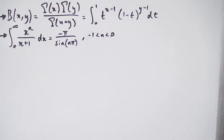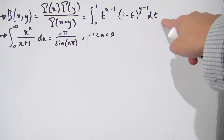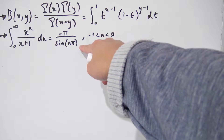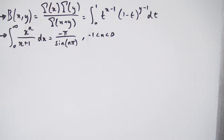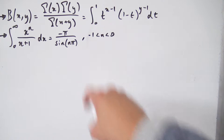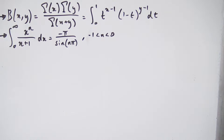Hello everybody, and today I'm going to be deriving the Euler Reflection Formula. I've done two prerequisite videos that you should probably check out before watching this one — mainly deriving the integral representation for the beta function, as well as a separate integral that takes about an hour to evaluate using complex analysis and actually pops up during this proof. Make sure to check those out, and let's jump straight in.